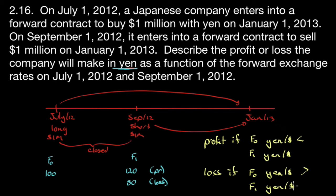Currencies can be a little tricky, which is why when you get currency questions, draw out your timeline and think about what you need to do. There are always two currencies involved — when you're long one, you're implicitly short the other. Ask yourself: what currency am I making my profit or loss in, and start thinking in those terms. Even now, there are times I get a currency question with multiple steps and I have to think it through, keeping track of which currency I'm long and which I'm short.